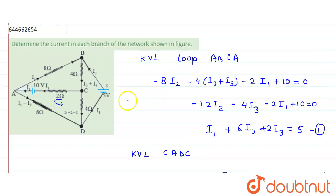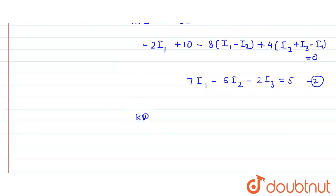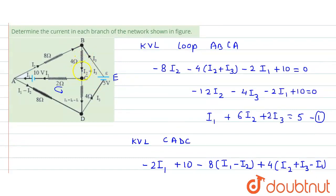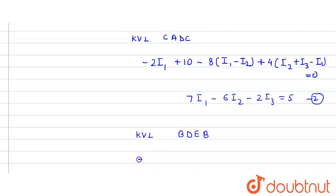The third equation comes from loop BDEB. Applying KVL in this loop: from here to here, the direction of current matches our movement, so potential is dropped: minus 4·(i2 + i3).